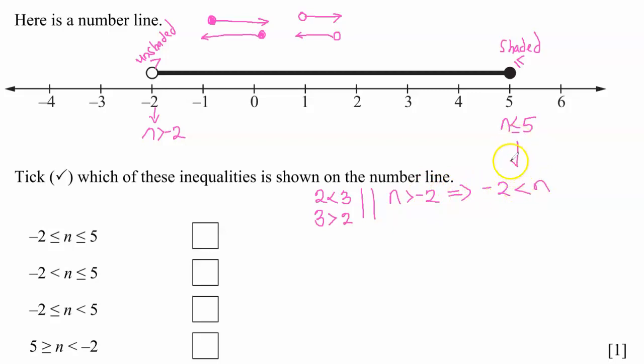So this is how I'm going to combine both inequalities. So I'm going to have negative two less than n. And of course, n is less or equal to five.